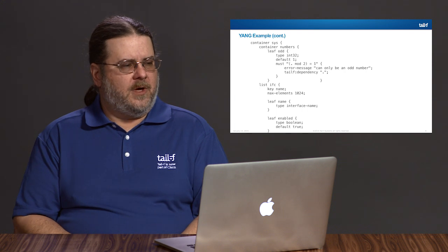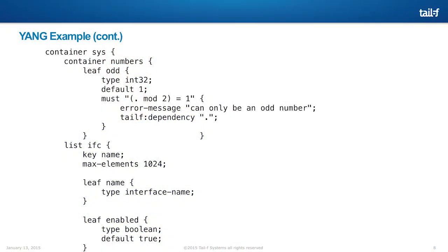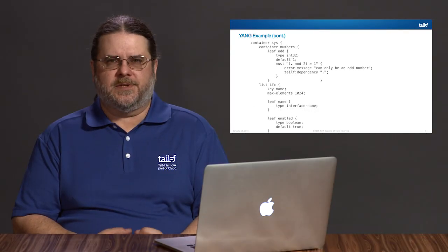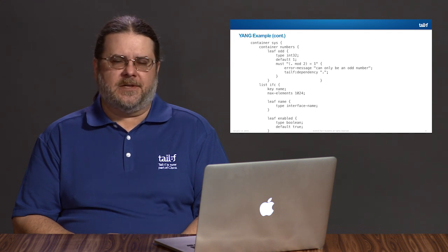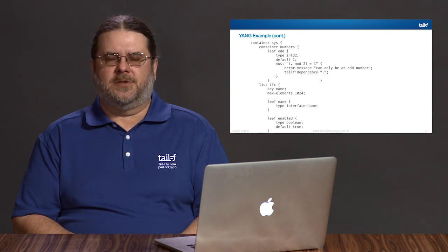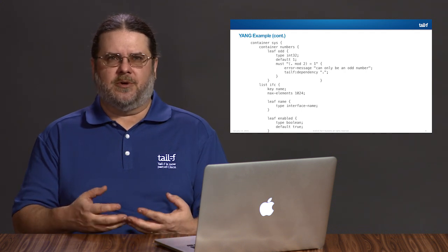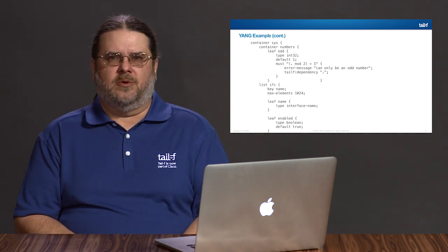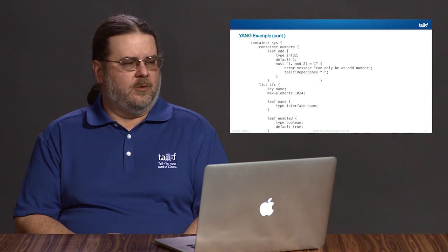The key statements to focus on in Yang are leaf, container, and list — these are pretty much the core three statements. A leaf, such as a leaf called 'odd', has a type and actually holds data. A container is used to organize the tree — Yang is an XML schema description language, and XML is tree-based or hierarchical. So container organizes that tree or graph, and a leaf is an end node that holds data.